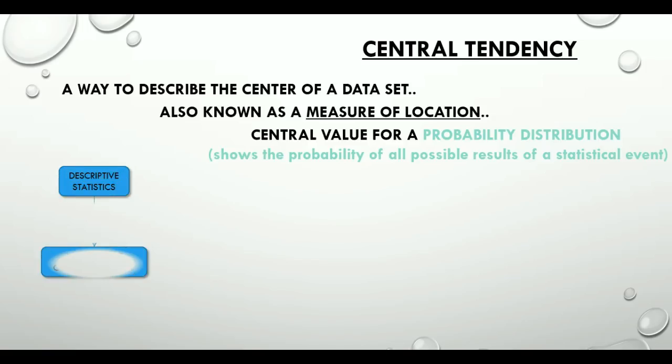Measures of central tendency are a part of descriptive statistics and there are three popular measures of central tendency. First one is the mean, denoted by the symbol mu, which is the population mean and also known as the arithmetic average. It is calculated as the sum of the values of data points divided by the number of data points.